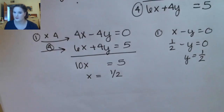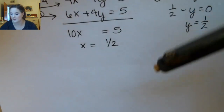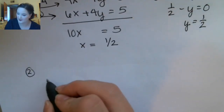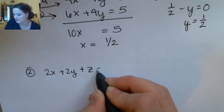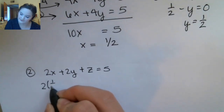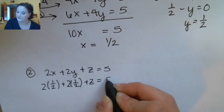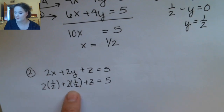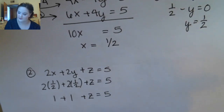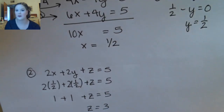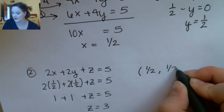The last thing I need to do is plug both x and y into the second or third equation to get z. Using my second equation, which was 2x plus 2y plus z equals 5: 1 plus 1 plus z equals 5, which gives me z equals 3. So my final answer would be the ordered triple (1/2, 1/2, 3).